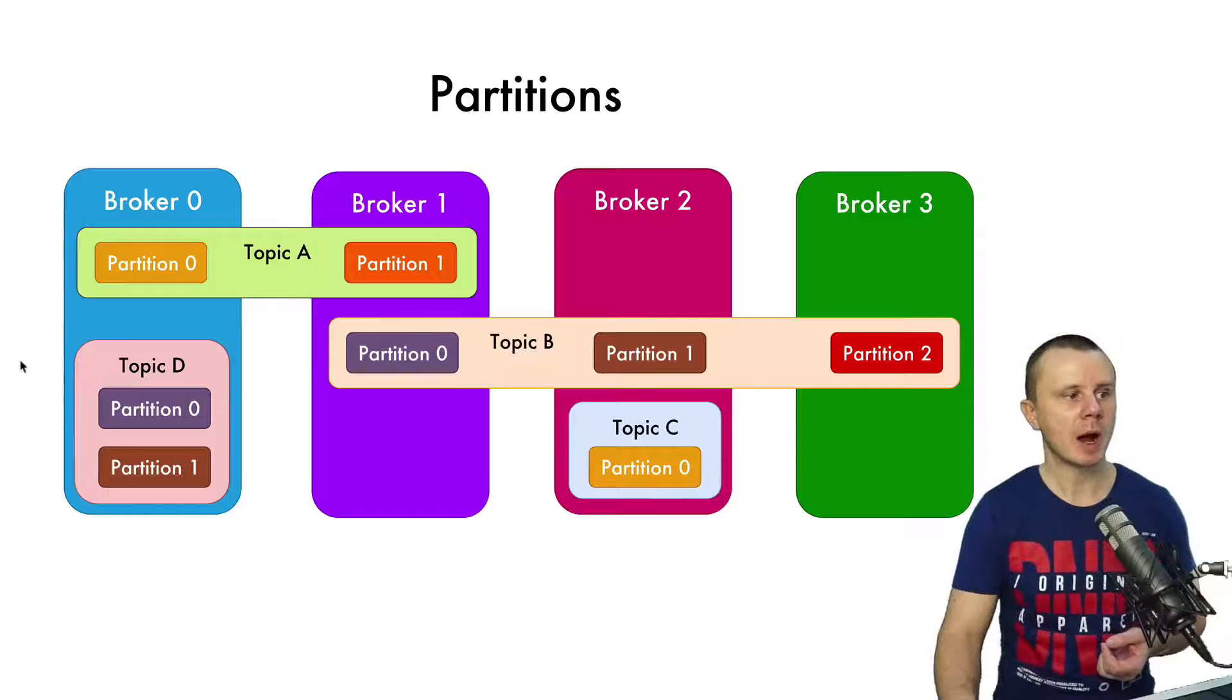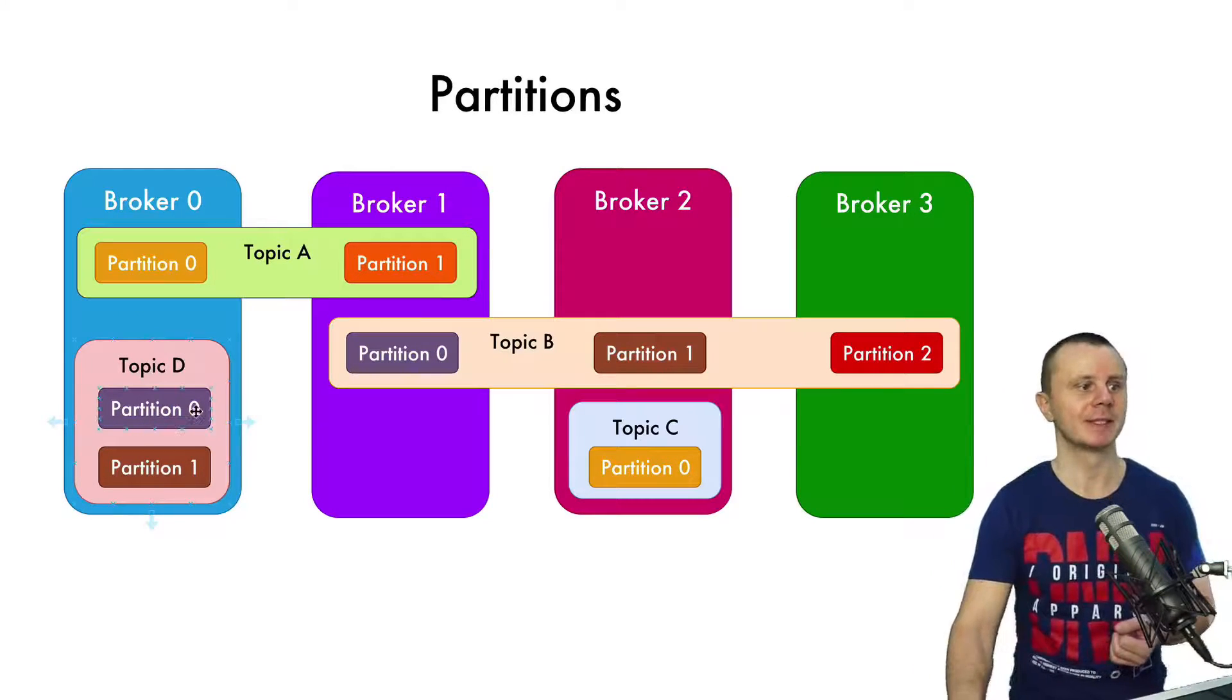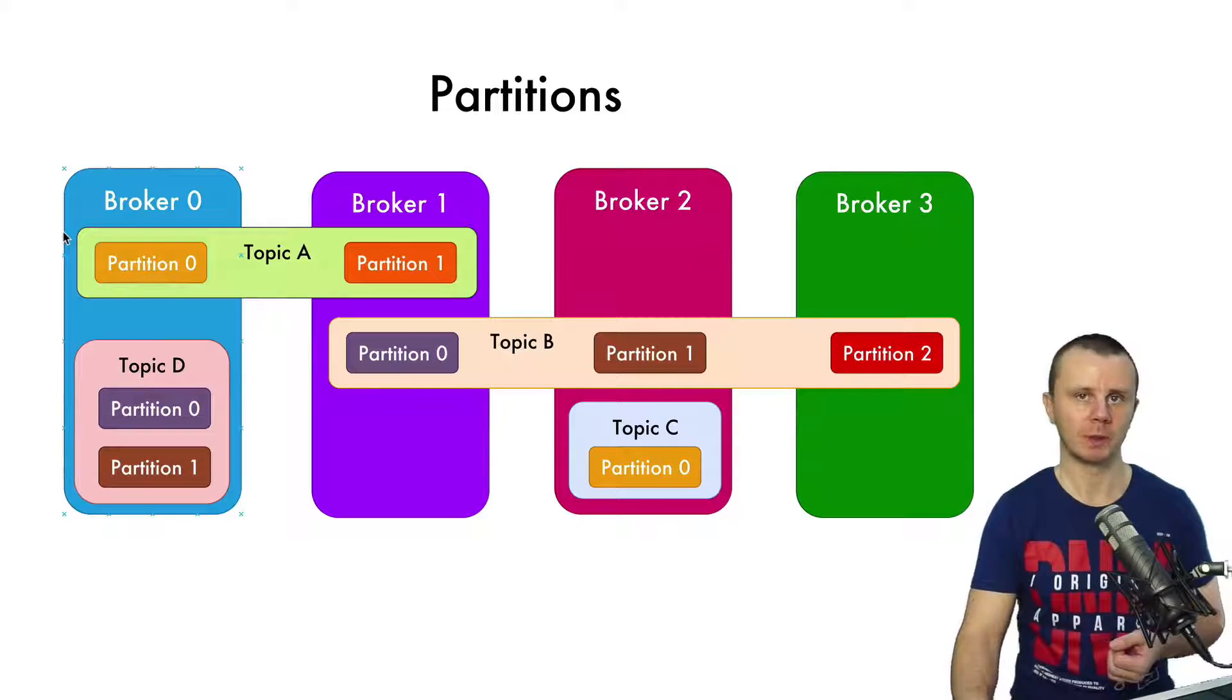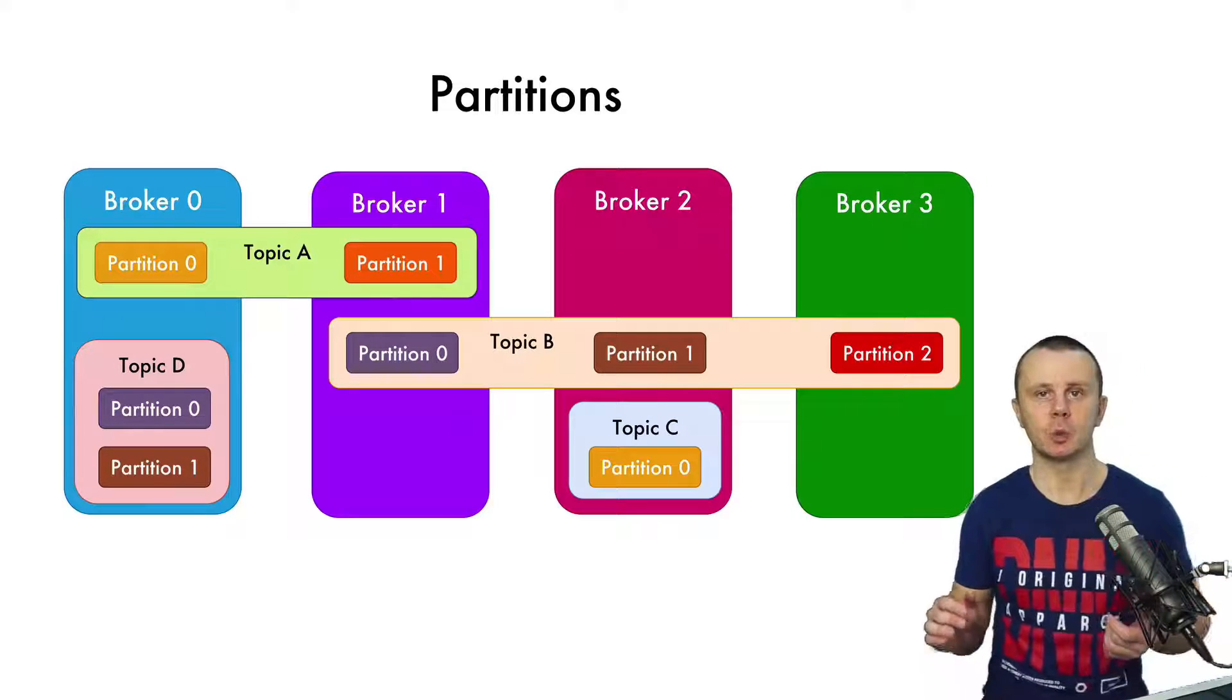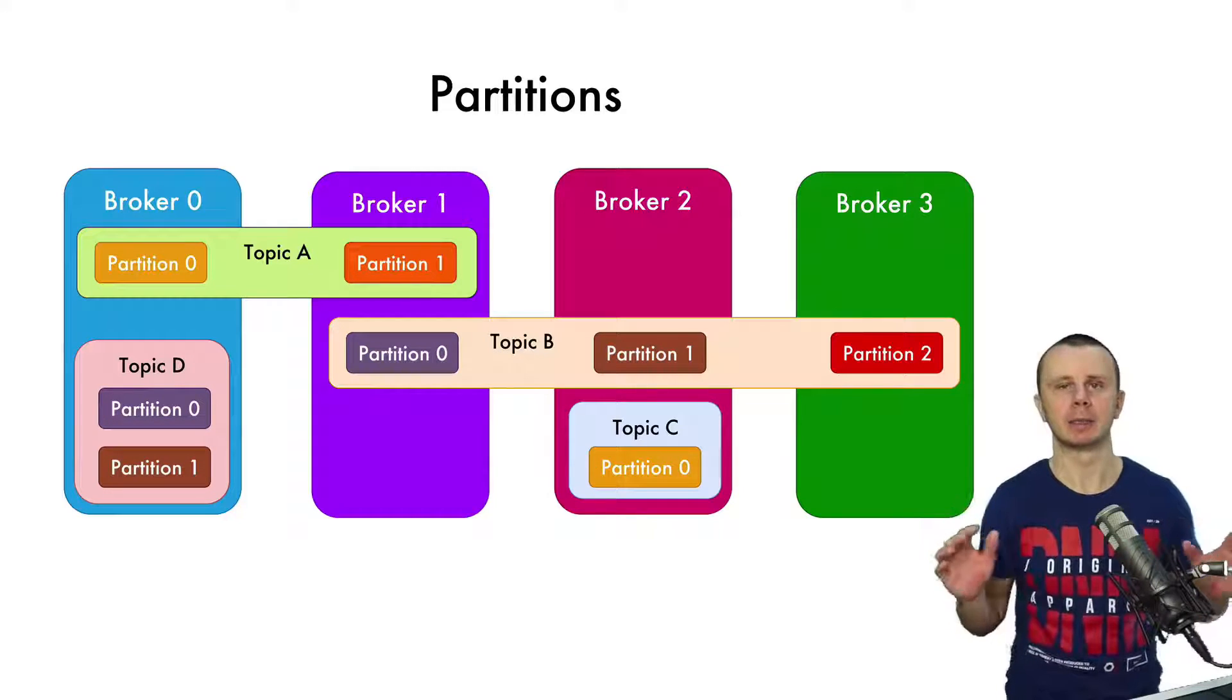Also on this diagram you see one more topic, Topic D, that has two partitions, partition 0 and partition 1, that are located both on one broker, broker 0. It is also possible. You are able to create topics with hundreds of different partitions that will be spread among multiple brokers.